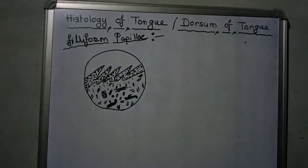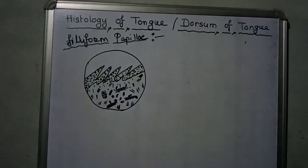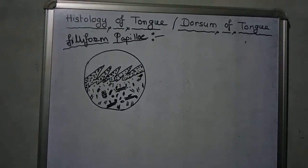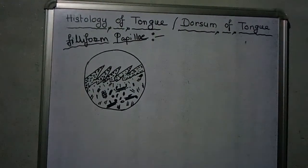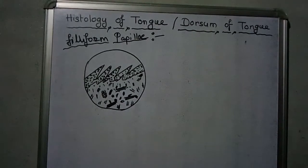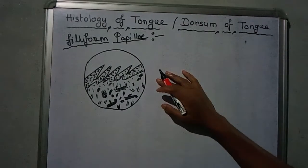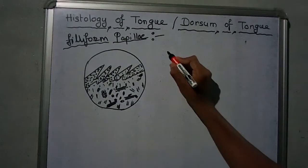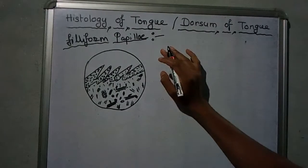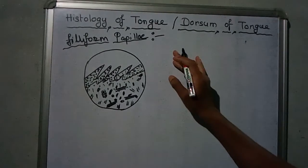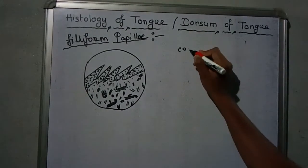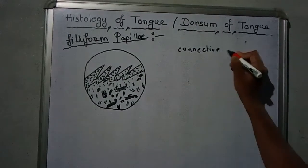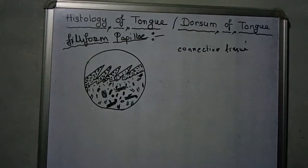These are filiform papillae, found on the surface of the tongue. They are located on the anterior part of the tongue. These are membranous, fine-pointed, and cone-shaped papillae. The filiform papillae are also called epithelial structures containing a core of connective tissue.